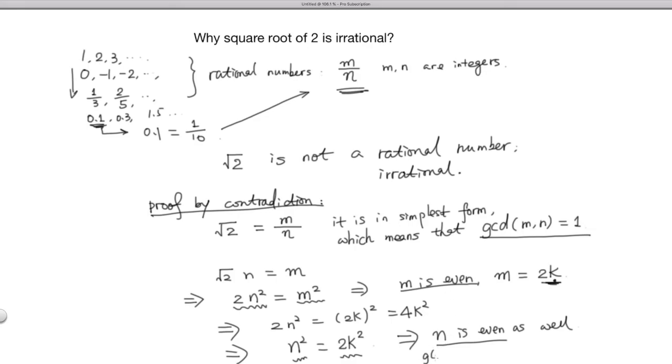Let me write down. So GCD here, m, n is going to be bigger than 2, but we have GCD of m, n equals 1 from the assumption, so this is contradiction.